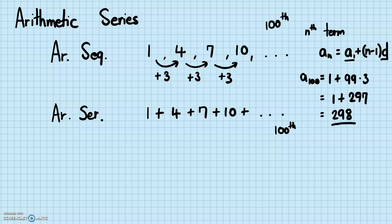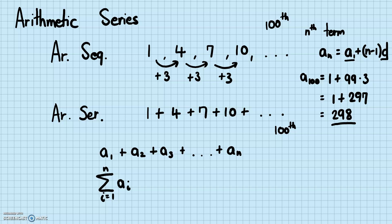By the definition of arithmetic series, we need to add up the first term, plus the second term, plus the third term, all the way until the nth term. That can be expressed as a summation from i equals 1 to n of a_i. Each of these terms for an arithmetic sequence has a definition — namely, each term can be defined using the nth term formula.